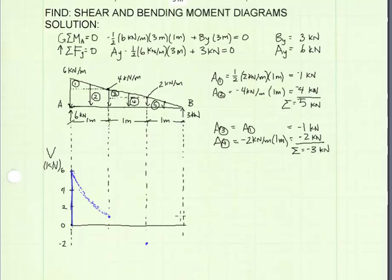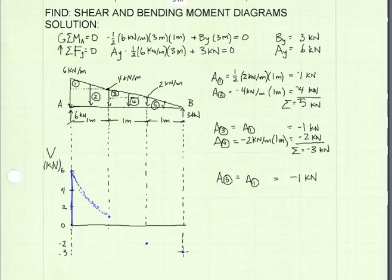For the last meter of the beam from x equals 2 to 3 meters, integrating again under the distributed load — area five — our shear diagram drops an additional 1 kilonewton, from negative 2 to negative 3. Now I can finish drawing my shear diagram curve.